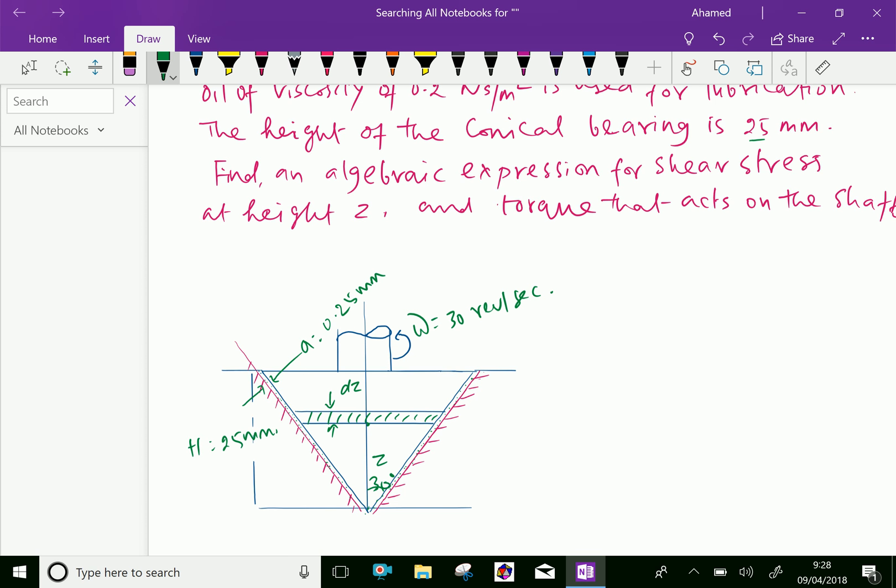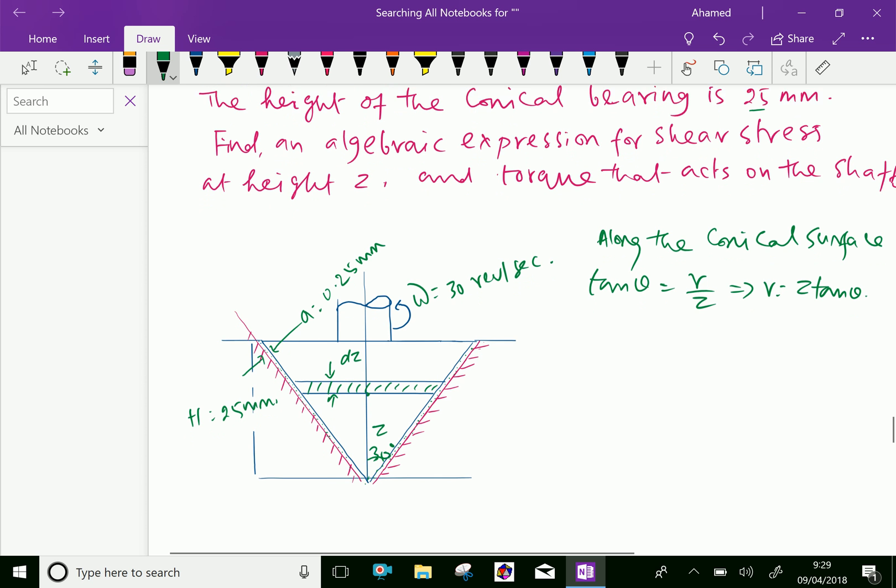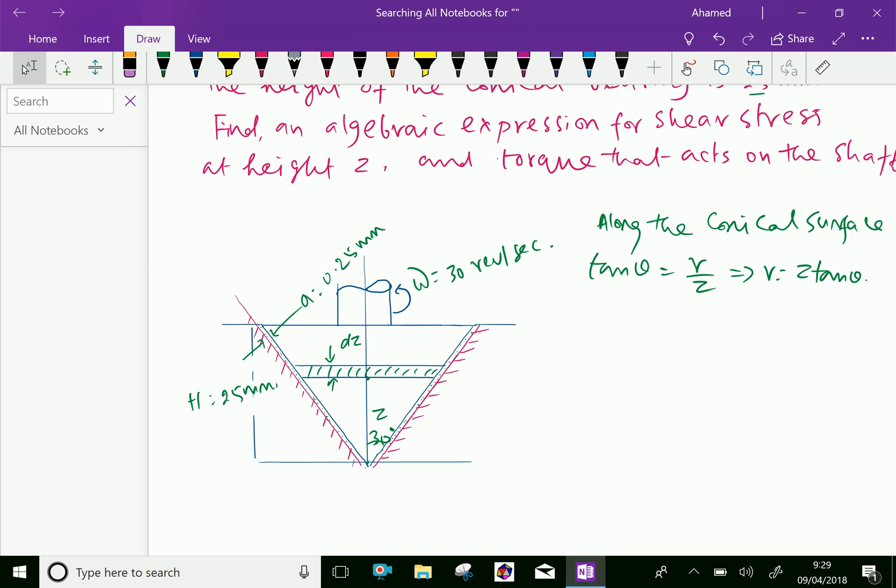Here, along the conical surface, tan theta equal R by Z. Therefore, R equal Z tan theta.